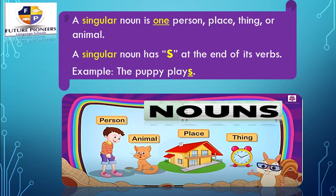So, a singular noun is one person, one place, one thing, or one animal — it's only one. A singular noun has S at the end of its verb. Like in this example: the puppy plays. It's only one puppy, so 'plays.' But let's remember what nouns are — nouns are the names of persons, animals, places, and things. Thank you very much and see you soon.